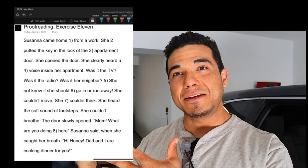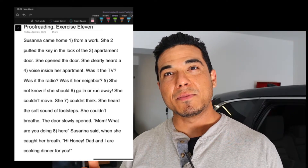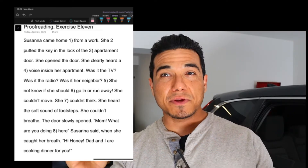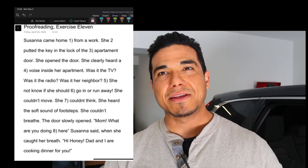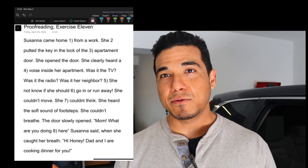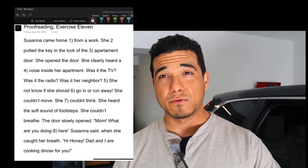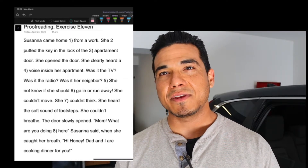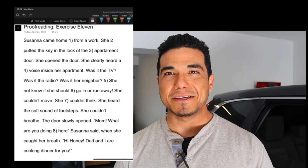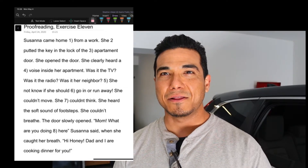Welcome back for yet another proofreading exercise. In just a moment you should see today's paragraph, which magically appears on screen. I'm going to read this paragraph to you after it expands, and I'm going to ask that you pause the video, make any necessary corrections you can identify — whether they're spelling, punctuation, or grammar related. You're going to resume the video, and we're going to correct it together and see how closely my corrections align with yours.